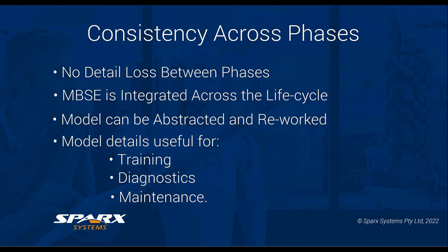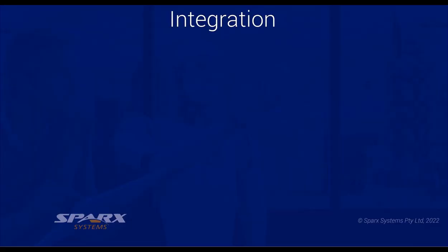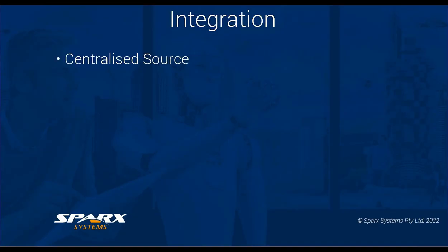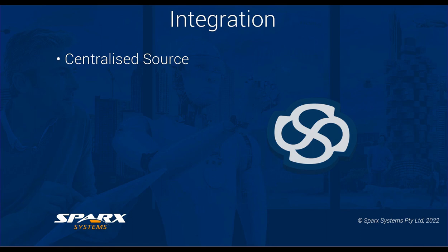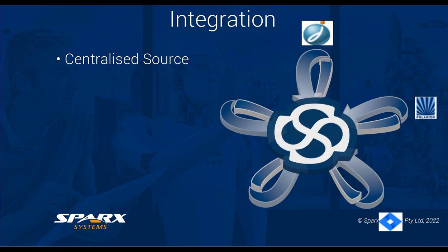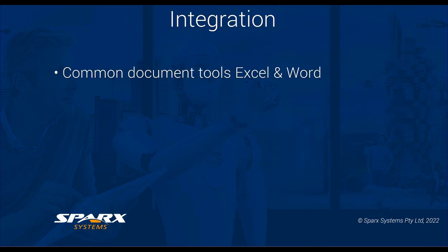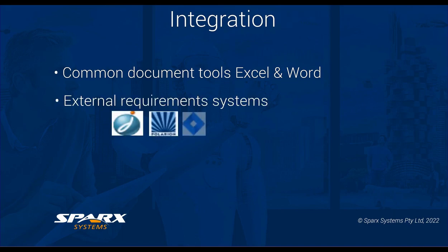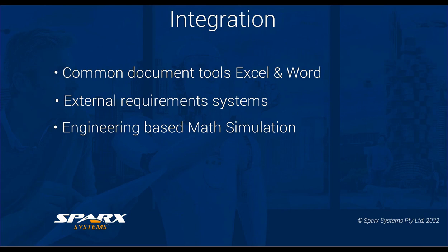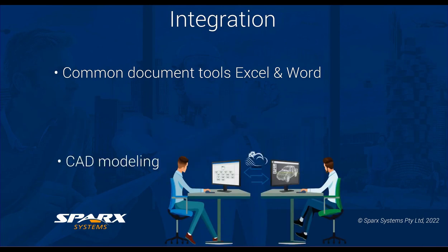Enterprise Architect covers all these aspects, from stringent conformity to modelling language specifications through to cross-checking and documentation, carried out in a holistic manner based on a centralised repository. Although powerful in its own right, there are other tools that provide features more specific to particular disciplines, such as mathematical simulation or CAD design tools. This is where the integration and exchange features are crucial for enabling broad connectivity to these domain-specific tools. This could include common document tools like Excel and Word, external requirement systems like DOORS, Polarian and Jira, engineering-based math simulation like MATLAB Simulink and Open Modelica, as well as CAD modelling.